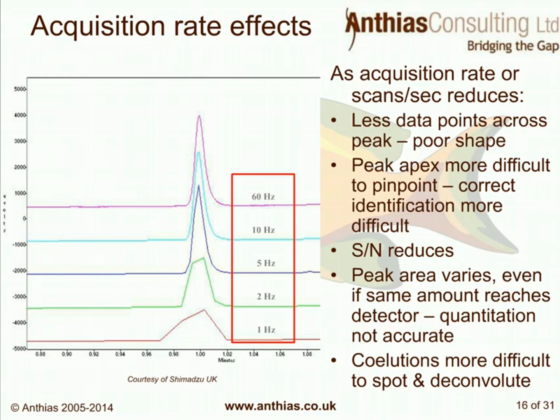As acquisition rate or scans per second reduces, we get fewer data points across the peak, and the peak shape becomes less clear and less reproducible. The peak apex is more difficult to pinpoint for correct identification. Signal to noise reduces, peak area varies, quantitation becomes inaccurate, and coelutions are more difficult to spot and deconvolute.